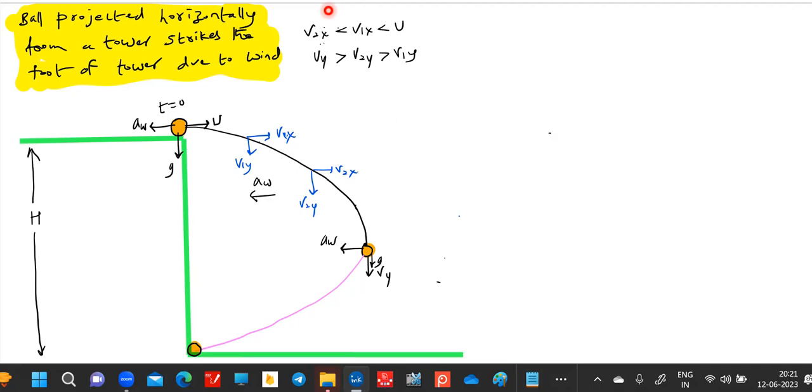This is the parabolic part. At one instant of time, let this be at instant of time TAB. The horizontal component will become zero. Only it will have the vertical component. Again, the wind will continuously try to blow. Then the particle will move in again a parabolic part.